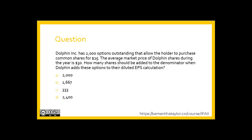A question. Dolphin Inc. has 2,000 options outstanding that allow the holder to purchase common shares for $25. The average market price of Dolphin shares during the year is $30. How many shares would be added to the denominator when Dolphin includes these options in their diluted EPS calculation?